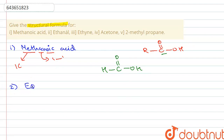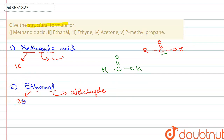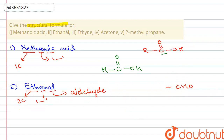Second, we have ethanal. The suffix 'al' means it is an aldehyde. The word root 'eth' means it contains two carbon atoms, and 'an' means there is a single bond between the two carbon atoms. The general formula for an aldehyde is –CHO.